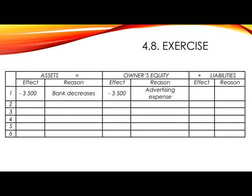Number 2. Paid salaries by cheque, 12,500 rand. The two accounts involved are bank, which is an asset, and salaries, which is an expense that will decrease equity. In assets, you will show minus 12,500 as bank decreases, and in owner's equity, minus 12,500, as salaries is an expense.